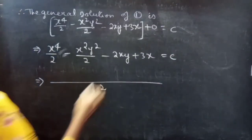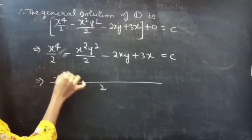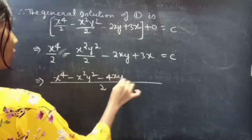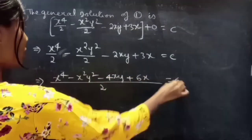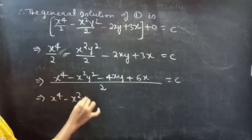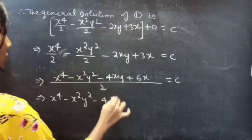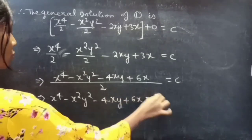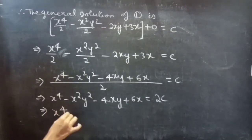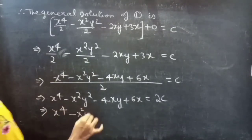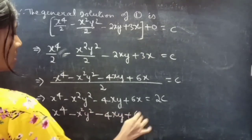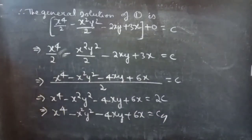We can write this as x⁴/2 - x²y²/2 - 2xy + 3x = c. Multiplying through by 2 (since 2c can be written as c): x⁴ - x²y² - 4xy + 6x = c, which is the required general solution.